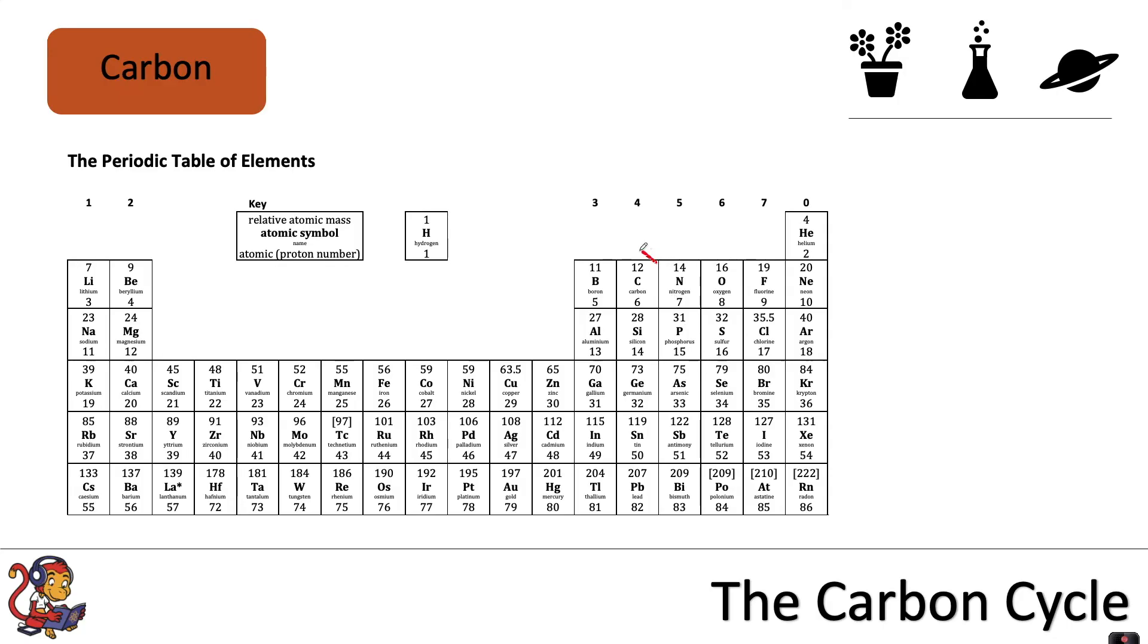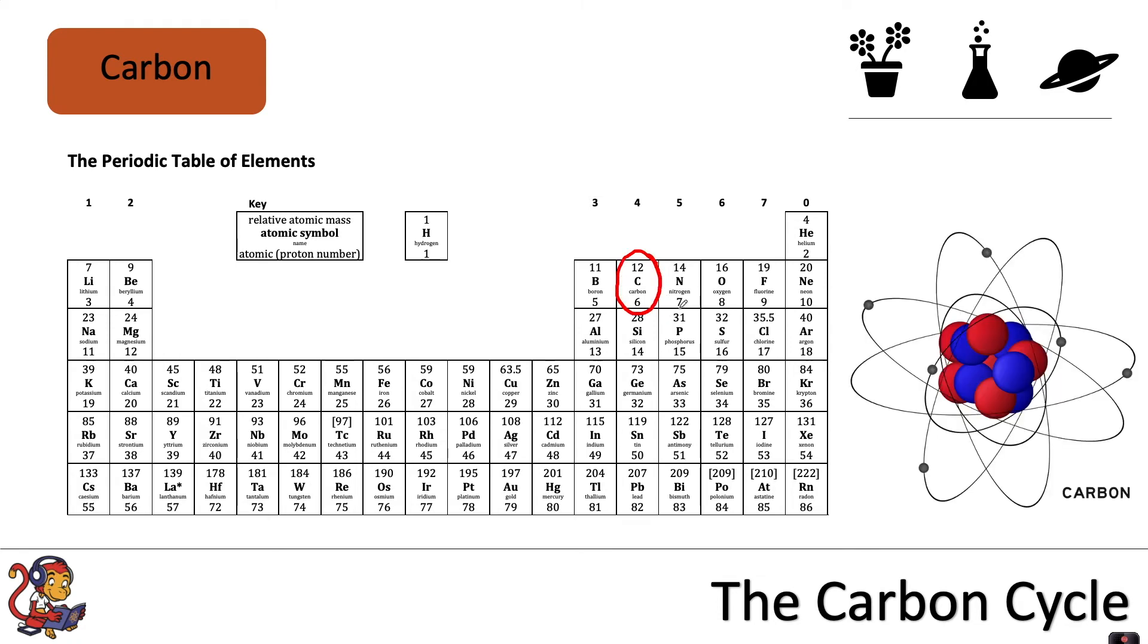Carbon is a non-metal element of the periodic table. It is an atom that consists of six protons, six neutrons within the nucleus, and six electrons around the outside. It has the atomic symbol as a capital C.